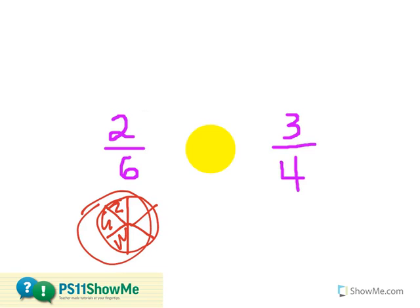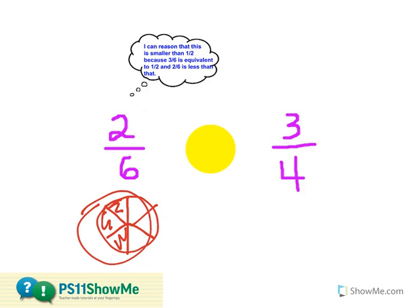I can actually look at two-sixths and think to myself — this is less than the halfway point. I can also do this with fourths, and think to myself: if I have a shape that is split into fourths, or four equal parts, the halfway point would actually be two-fourths.